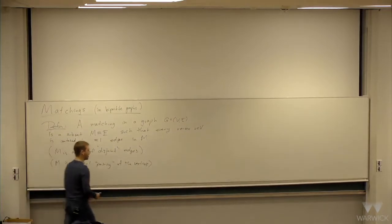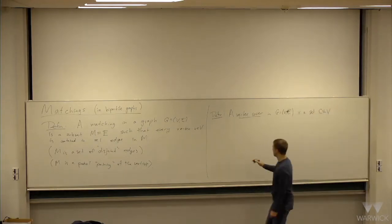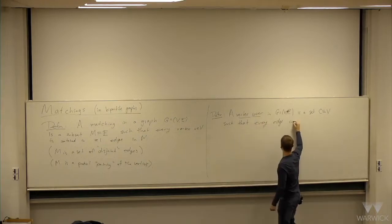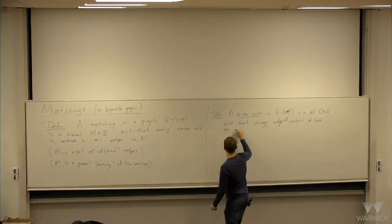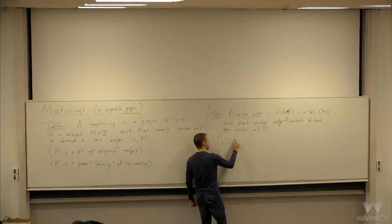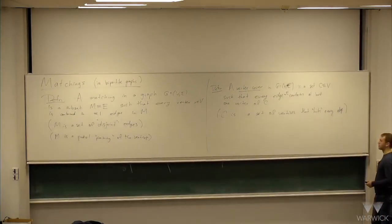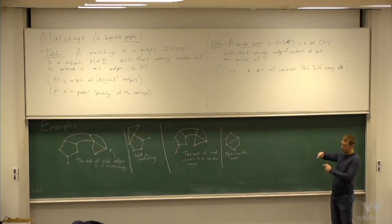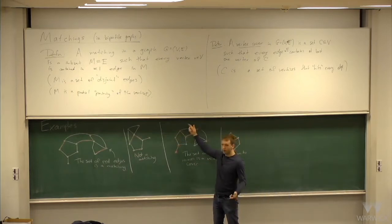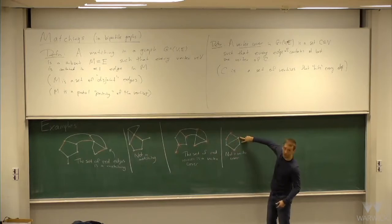Another definition is a vertex cover. A vertex cover in G is a subset C of the vertex set such that every edge of G contains at least one vertex of C. In other words, it's a set of vertices that hits every edge at least once. In this picture, this set of red vertices is a vertex cover, because each edge either has one or two red vertices. This other set is not a vertex cover because some edges don't get hit by the red set.